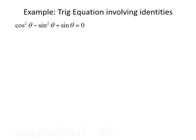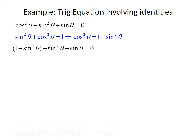Let's look at another example involving a trig equation that uses identities. We want to solve cos²θ − sin²θ + sinθ = 0. Recall the Pythagorean identity: sin²θ + cos²θ = 1, so cos²θ = 1 − sin²θ. Replacing cos²θ gives us 1 − sin²θ − sin²θ + sinθ = 0, which simplifies by combining like terms to −2sin²θ + sinθ + 1 = 0.